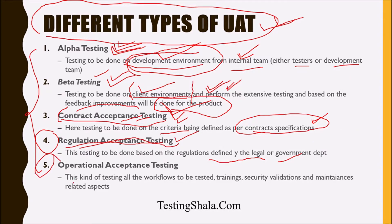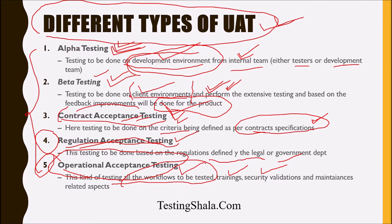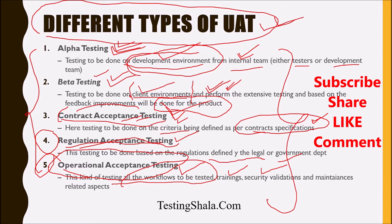The fifth type is Operational Acceptance Testing. This testing is done at the functional level, covering all critical workflows. It also validates training requirements once the product has been released, and checks for any challenges from a security perspective or future maintenance aspects. These are the five important types of user acceptance testing performed for any given product before releasing to the client.